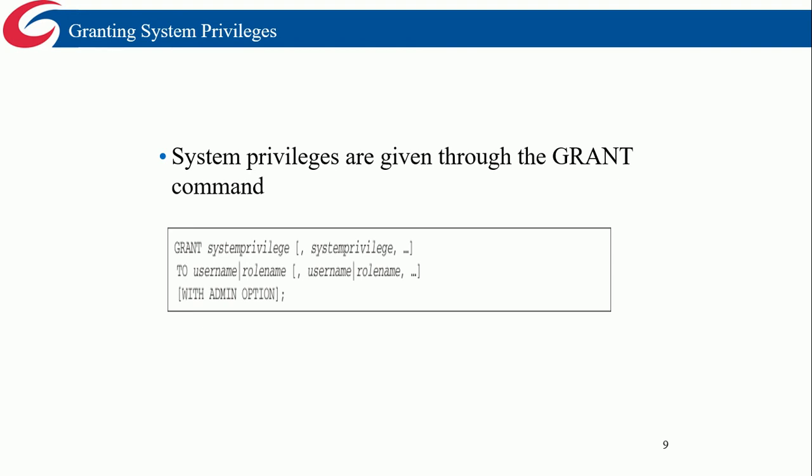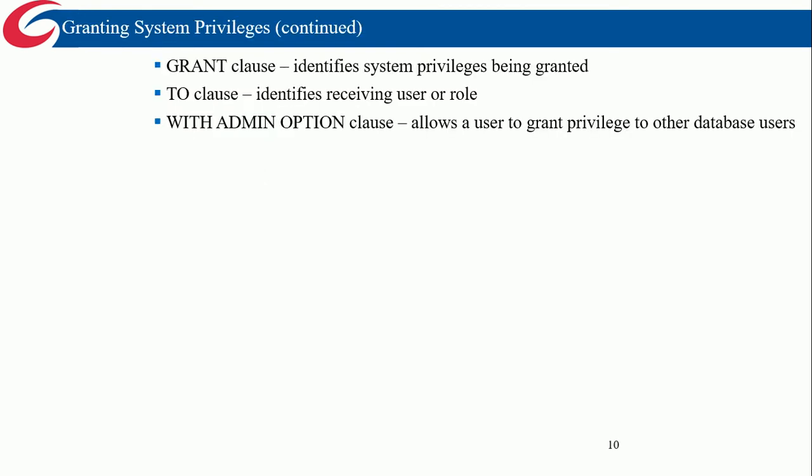System privileges can be given to someone using the GRANT command. You type the privilege name — or list multiple privileges — then list the usernames or role names you want to grant them to. The GRANT clause identifies the system privileges being granted, the TO clause identifies the users or roles receiving them, and the WITH ADMIN OPTION clause allows the user to then grant those privileges to other database users.